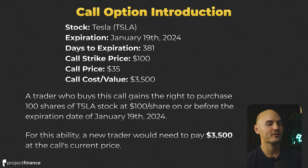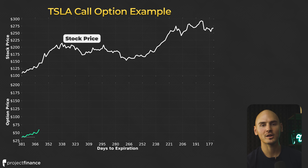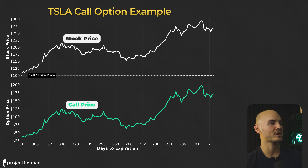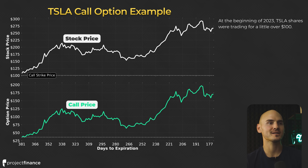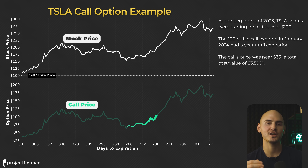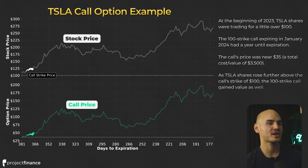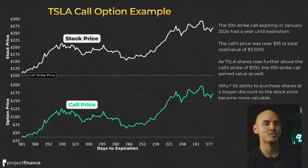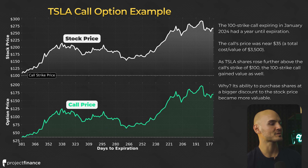In this graph, we're looking at the stock price versus the call option's price, with the call strike price at $100. At the beginning of 2023, Tesla shares were trading for just over $100, and the January 2024 call was trading for an initial price of $35, or a cost of $3,500. As Tesla shares rose after buying this call option, the call option's price increased in value, because the ability to purchase shares at a bigger discount to the stock price became more valuable. As the stock price gets further above the strike price, the call's price gets more valuable. And as the stock price comes back down, the call's price also comes back down.